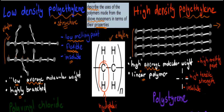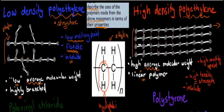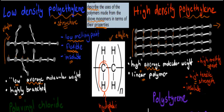For high-density polyethylene, it has a high melting point because you have so many chains together, and they all form dispersion forces between the chains, giving it very strong toughness. We have to put in a lot of energy to break all those bonds — that's why it has a high melting point. The same reason also gives it high tensile strength, because the chains are so close together and these dispersion forces hold them together, giving much more strength compared to low-density polyethylene. It's also insoluble because of those C-H bonds.